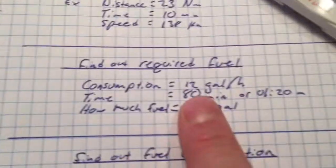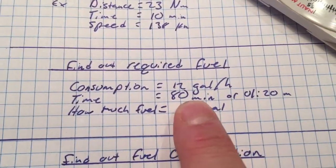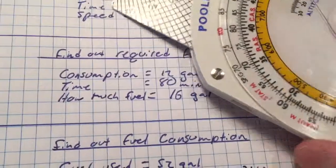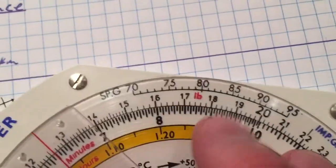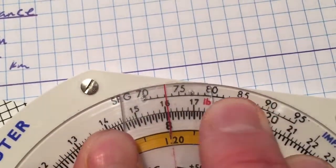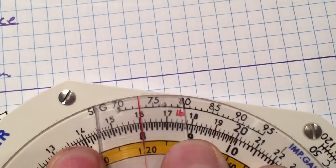And so now we have 12 gallons per hour of consumption and we took 80 minutes. So then we find 80 minutes here. And there it is. And then we find out that it says 16 gallons.